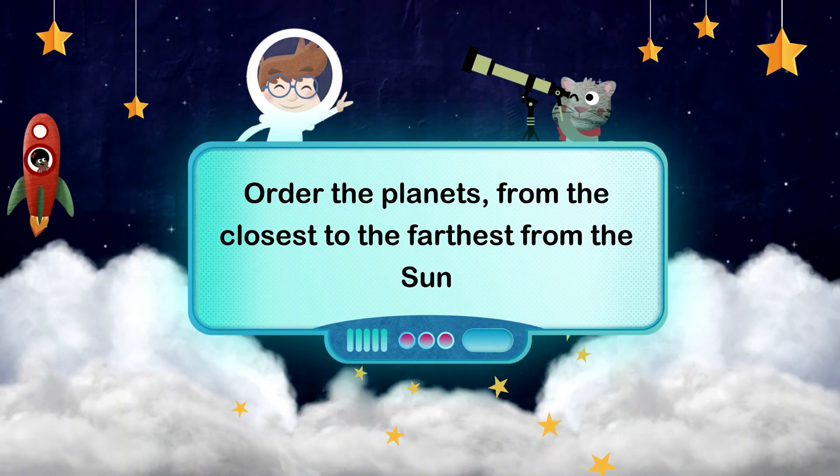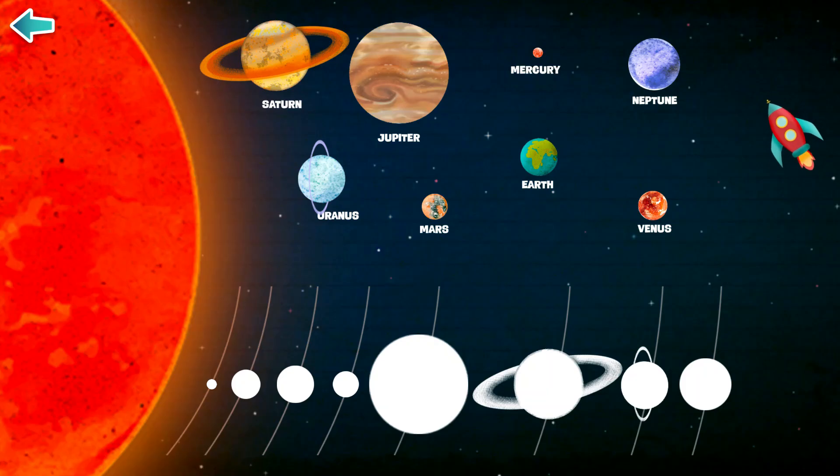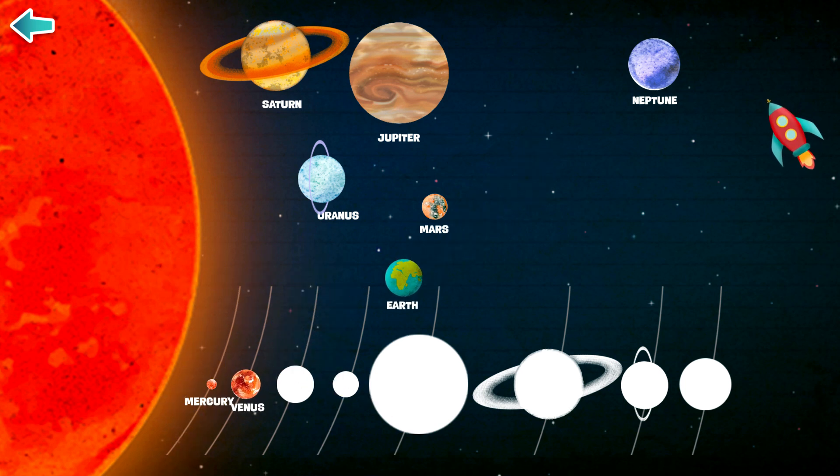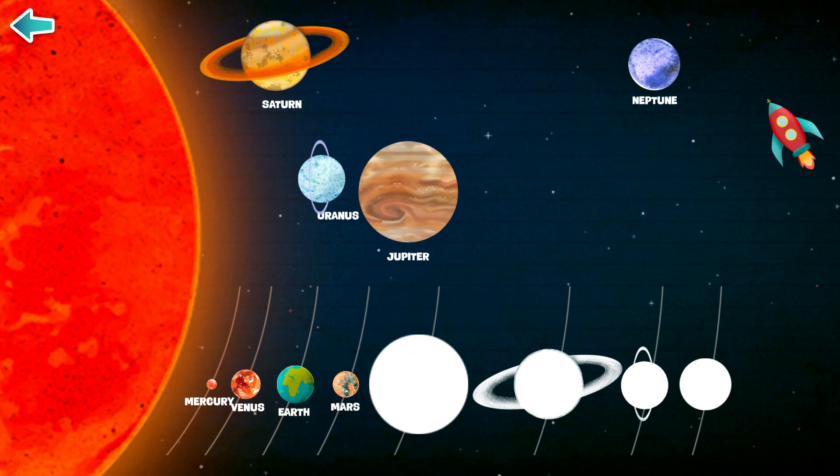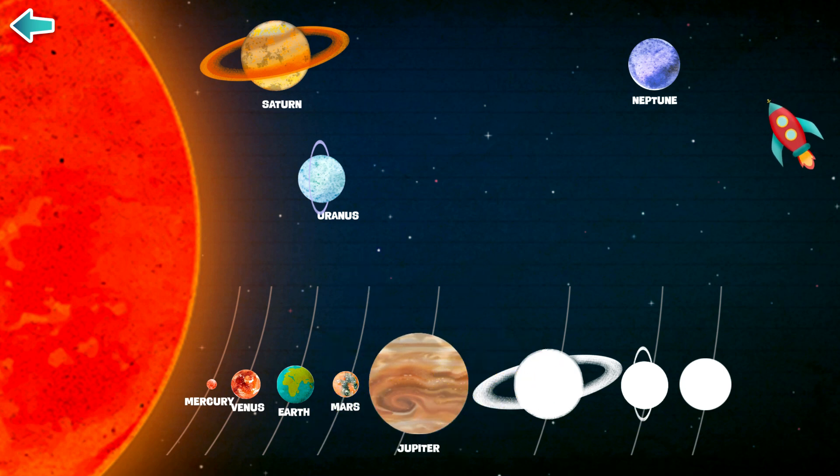Order the planets from the closest to the farthest from the Sun.